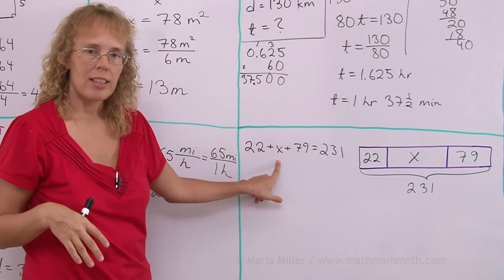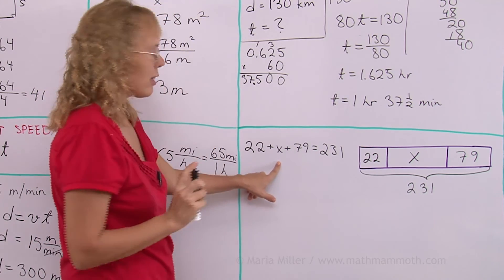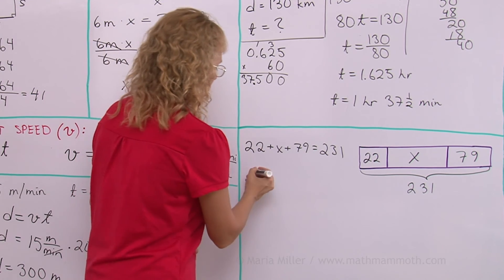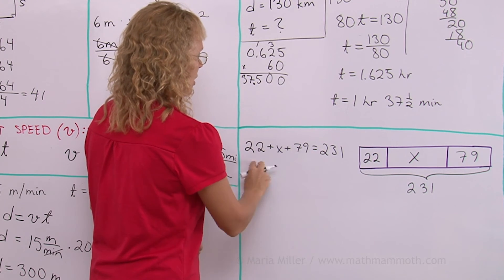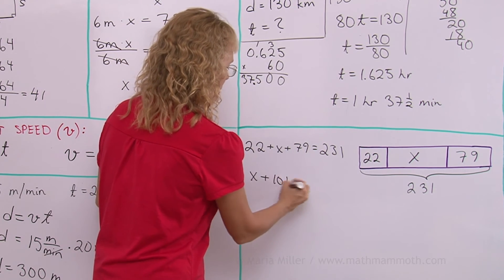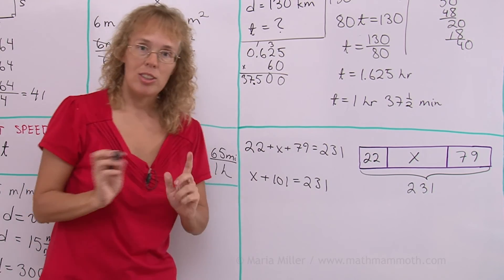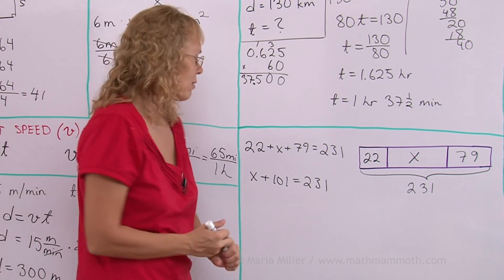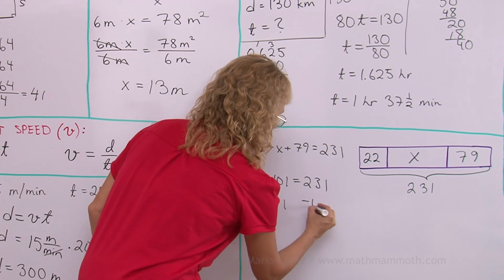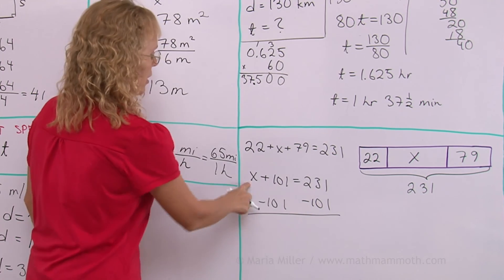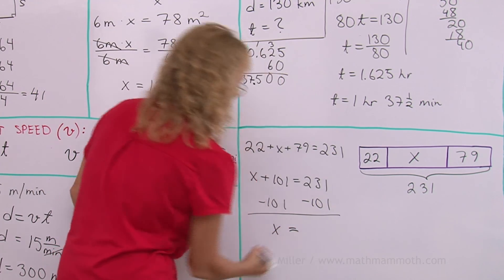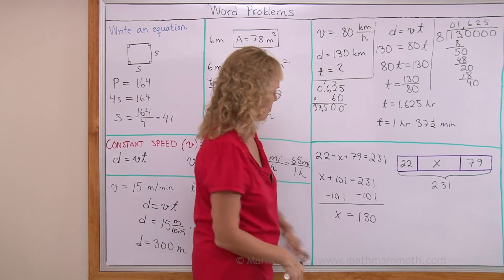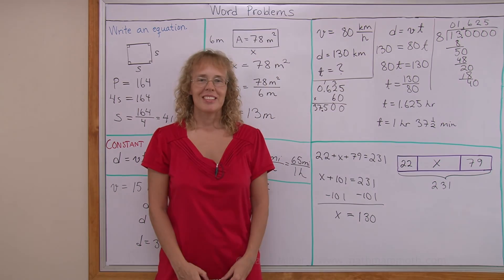X is here and we want to isolate X — leave it alone on one side. Before applying equation rules, let's simplify by adding 22 and 79 to get 101. So we have X plus 101 equals 231. It's now an addition equation. To get rid of the plus 101, we subtract 101 from both sides. Those cancel on the left, leaving X alone. On the right, 231 minus 101 gives us 130. So X equals 130, and the equation is solved.